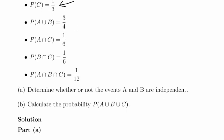We are also given some more information here. The probability of A union B is equal to 3 over 4. We are told that the probability of A intersection C is 1 sixth and the probability of B intersection C is 1 sixth. And also we are told that the probability of A intersection B intersection C is 1 12th.